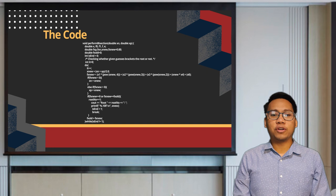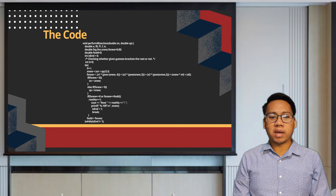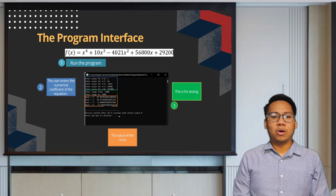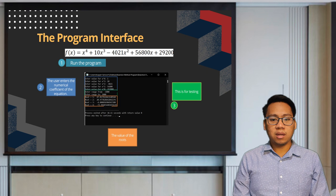This portion will identify the xn and xp to be used in the bisection method. After the intervals xp and xn are identified, the program will perform the bisection method as reflected in the code. On the development of the program, the intervals are set to be user-inputted data for testing purposes. As seen on the sample, the intervals are set from negative to positive 1,000.